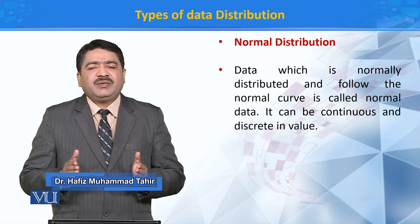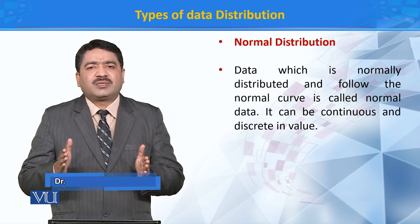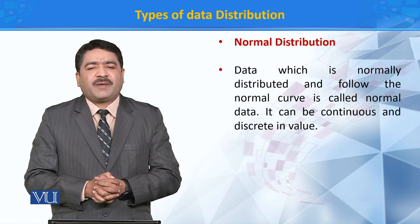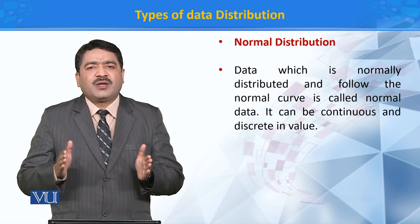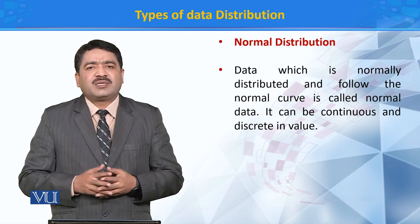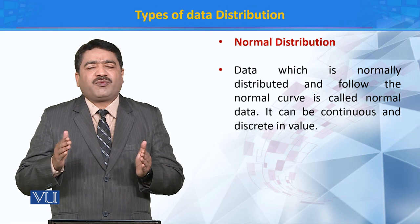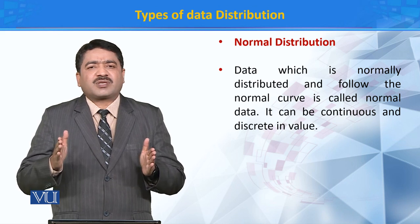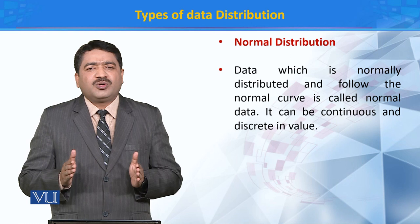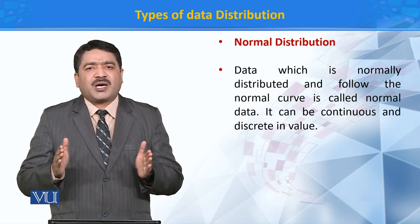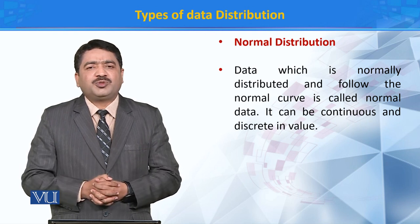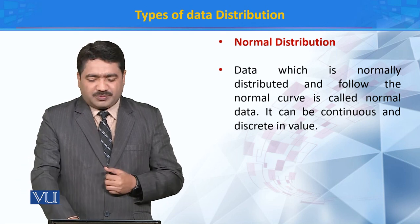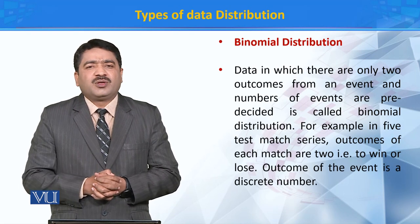Normal data का mean, median और mode तकरीबन बराबर होते हैं. Normal data के अंदर extreme values बहुत कम होते हैं. Normal data की mean deviation, standard error, और standard error of mean की values कम होती हैं. तो ऐसा data जो normal bell shape curve को follow करता हो उसको normal data कहते हैं और इस किसम की distribution को normal distribution कहते हैं.